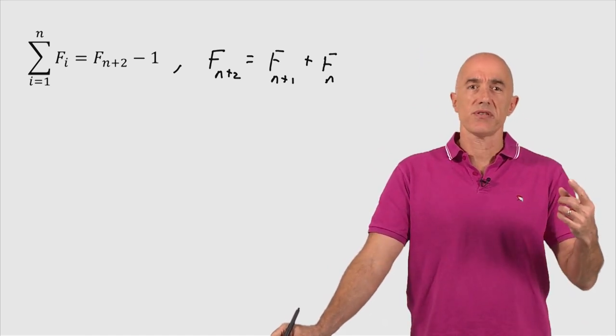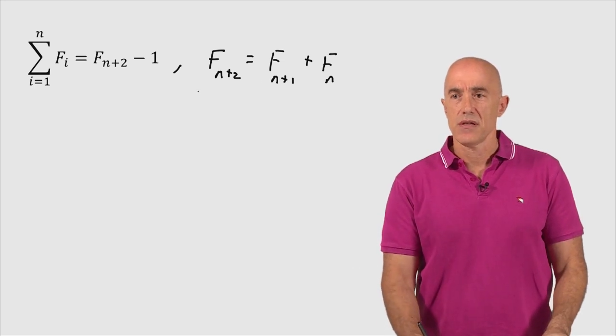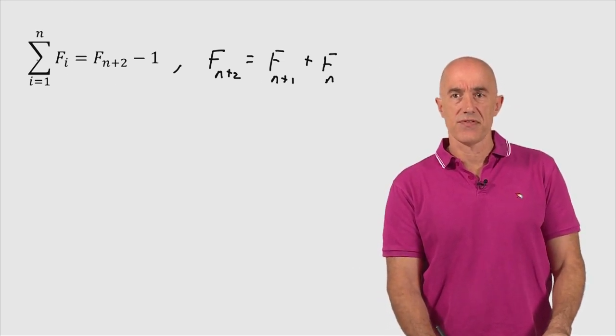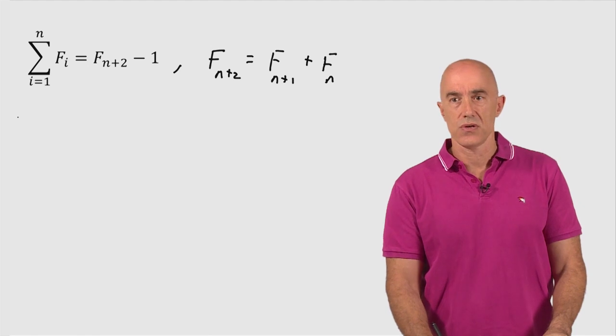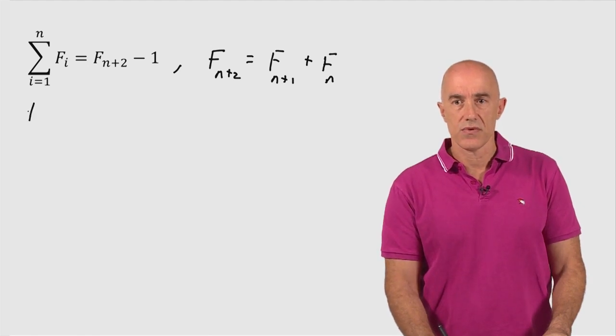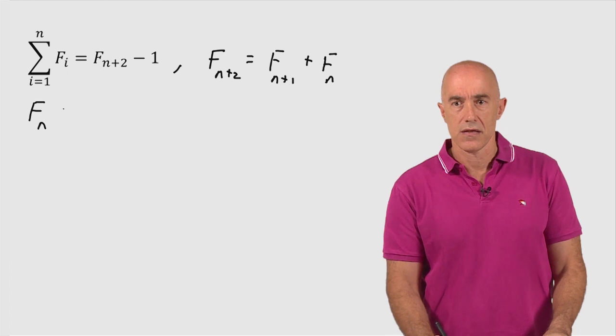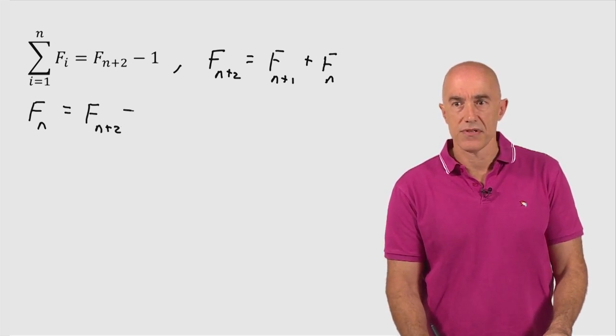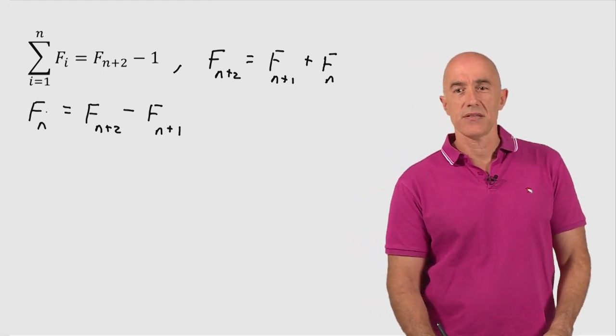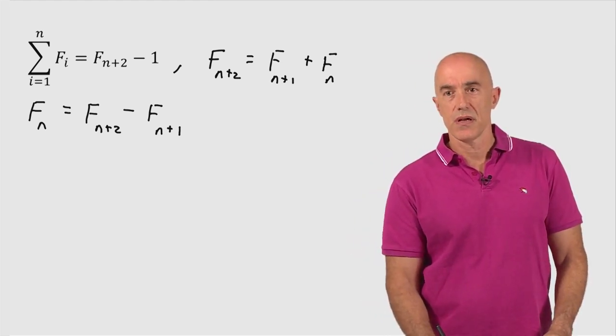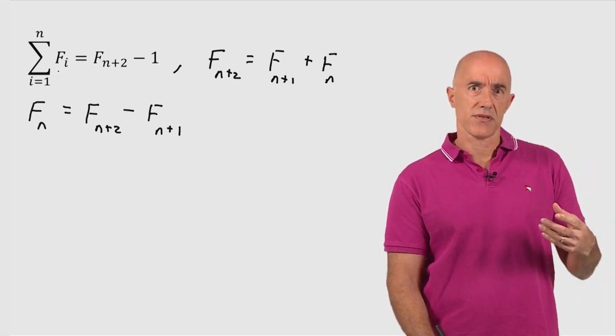But we can rearrange this formula. The left-hand side is going to have an F sub n, the last term in the sum. The right-hand side has an F n plus 2. So we can write this, we can try to write this as F sub n equals F sub n plus 2. Then we have to subtract F sub n plus 1, okay? And that would be the last term in the sum, the F sub n term.